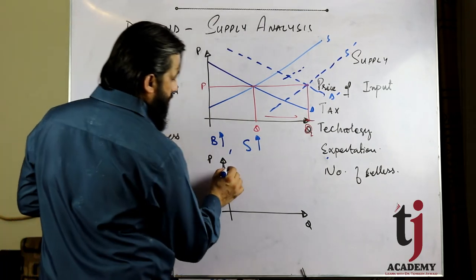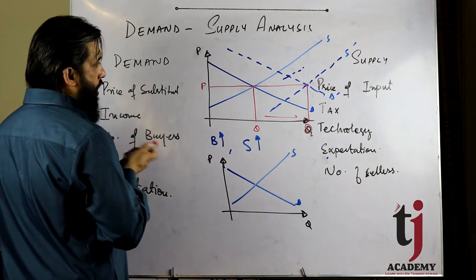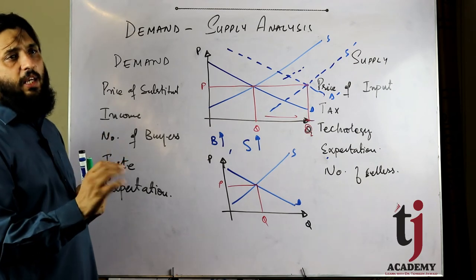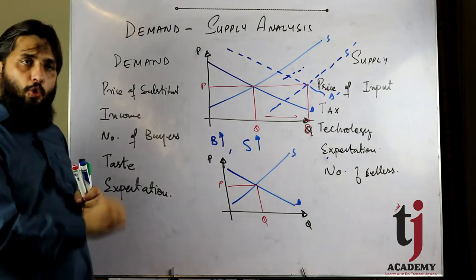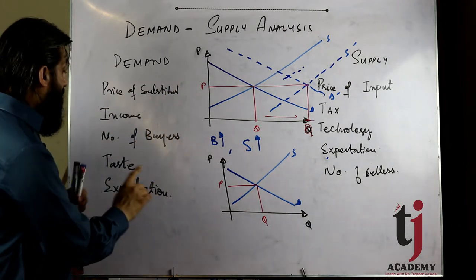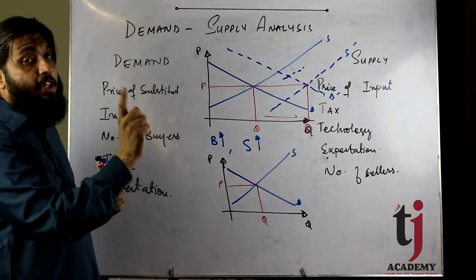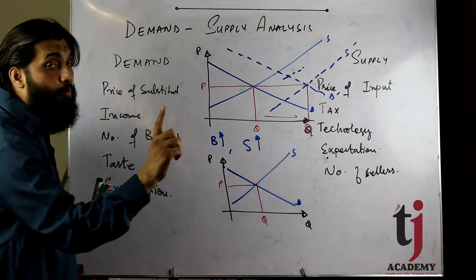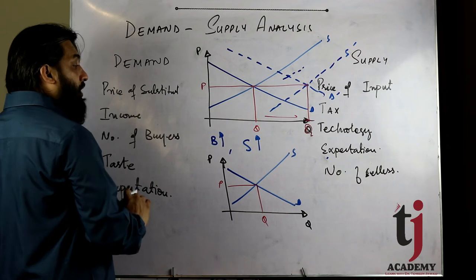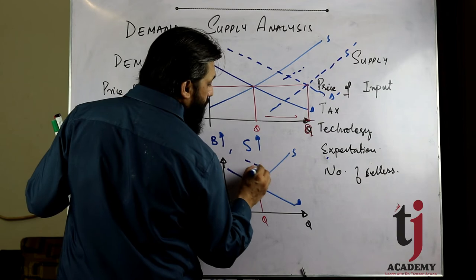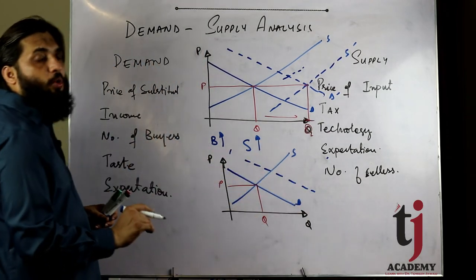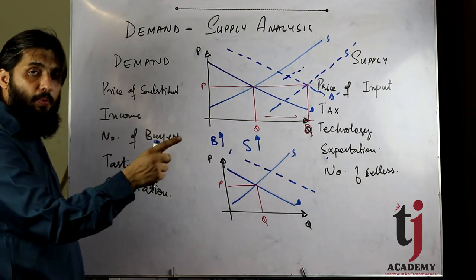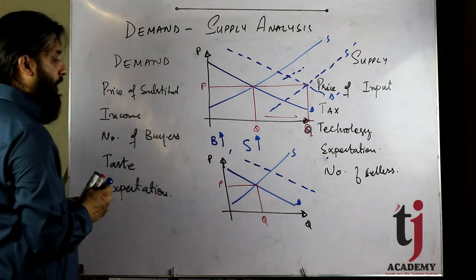Assume करते हैं कि price expectation बढ़ गई है — यानि expected inflation आगई। Consumer और producer दोनों सोच रहे हैं कि price बढ़ने वाली है। अभी price increase नहीं हुई — price बढ़ने वाली है। यह price change नहीं है, यह expected price है — other factor है। इसलिए demand shift होगी, along the curve नहीं। Expected price के बढ़ने से demand increase होगी।